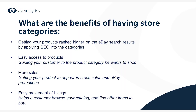So we're going to start off with this PowerPoint to go over some facts and benefits of having store categories. The benefits are: getting your products ranking higher on eBay search results by applying SEO into the categories; easy access to products, which guides your customer to the product category they want to shop; more sales by getting your product to appear in cross-sales on eBay promotions; and it allows easy movement of listings, helping the customer browse your catalog and find other items to buy.